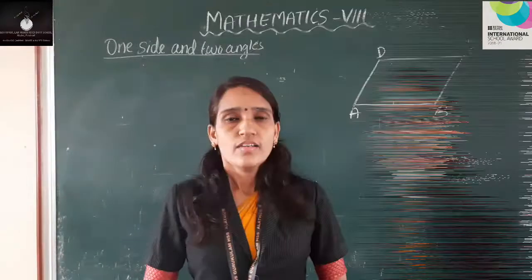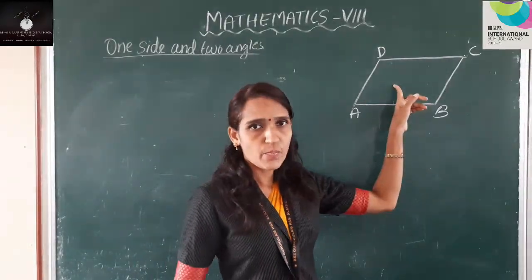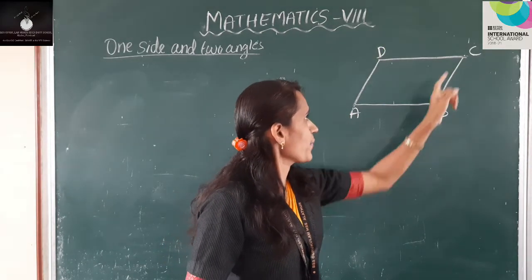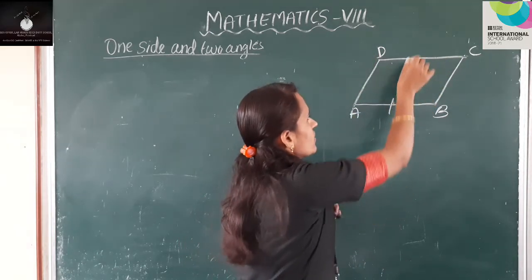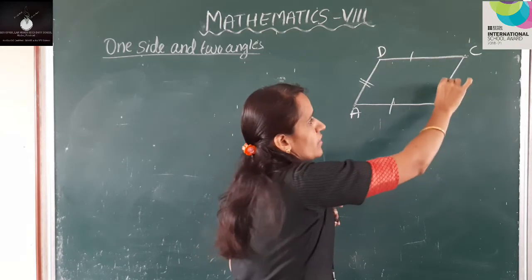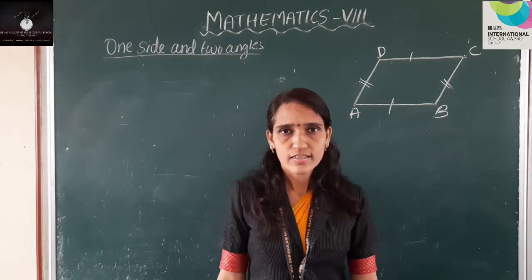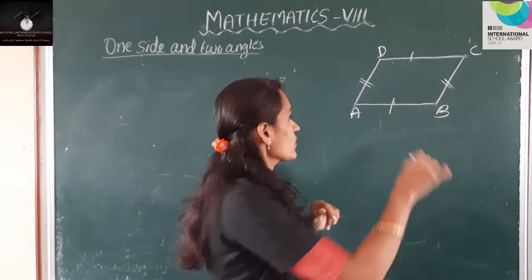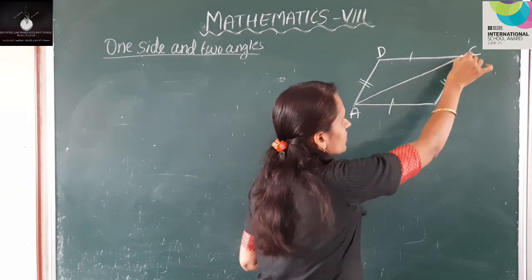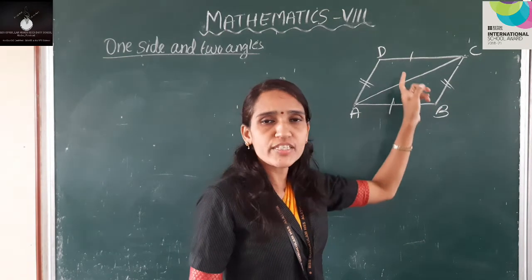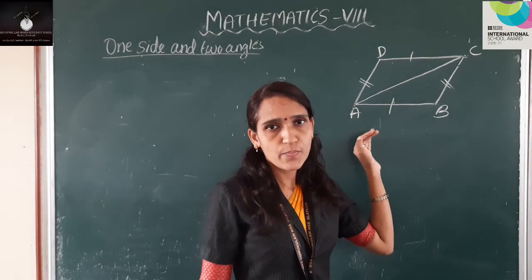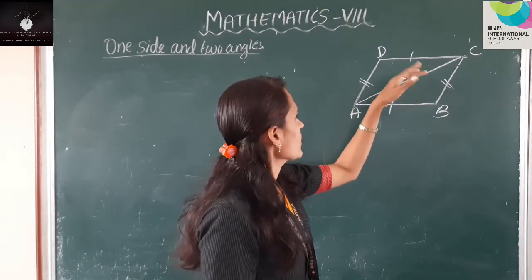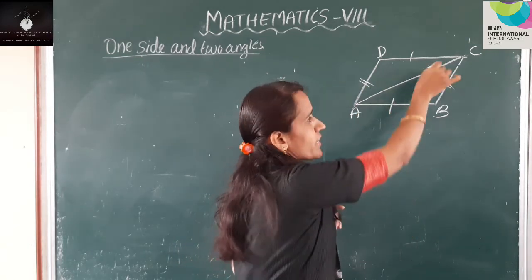Is it clear, children? Next, see this quadrilateral ABCD. Here the opposite sides AB and CD, and the opposite sides AD and BC, are parallel. So this quadrilateral is a parallelogram. Draw the diagonal AC to split this parallelogram into two triangles. Here, this side and two angles at its ends are equal.